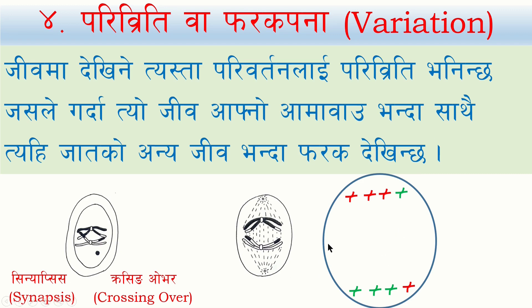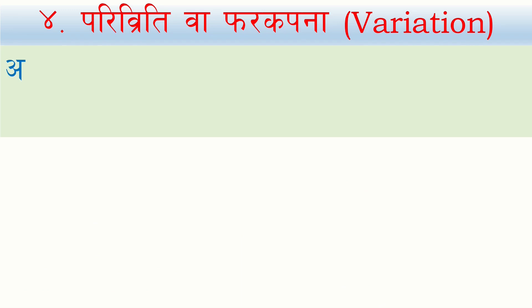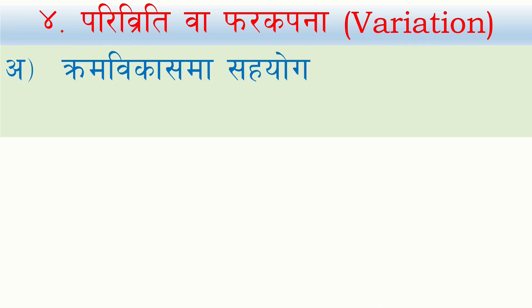This function is crossing over, or the reduction of the second division. This is how variation is introduced — so that offspring do not become identical to the parents. But what is the significance of this problem? The significance is variation through crossing over.